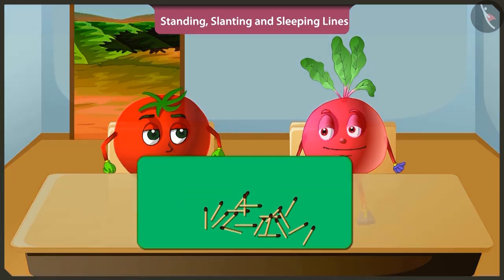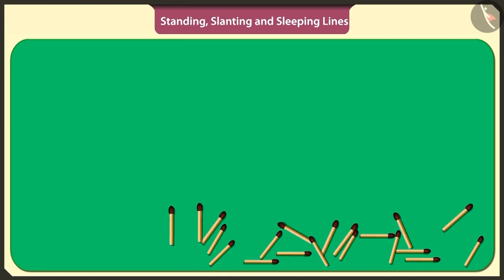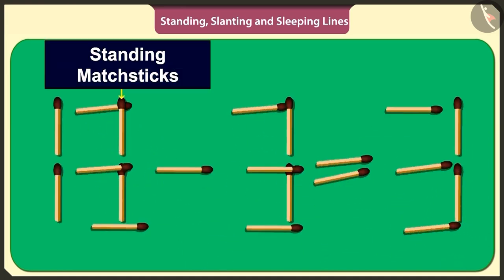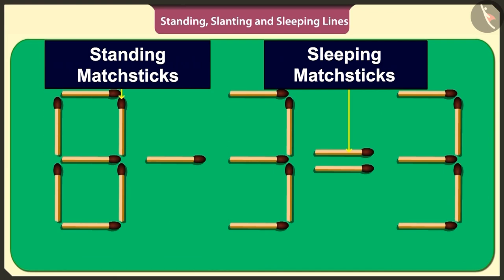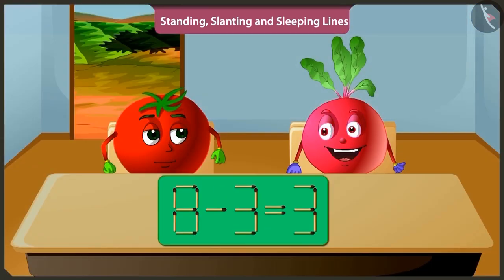Okay, Tingu. See, I will arrange these matchsticks in standing and sleeping lines to make a puzzle. Hey, but this puzzle is wrong. If we subtract three from eight, then we get five. This is the puzzle.